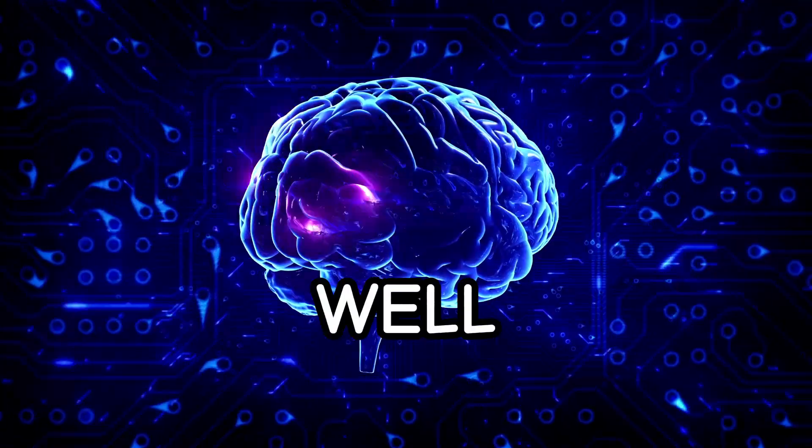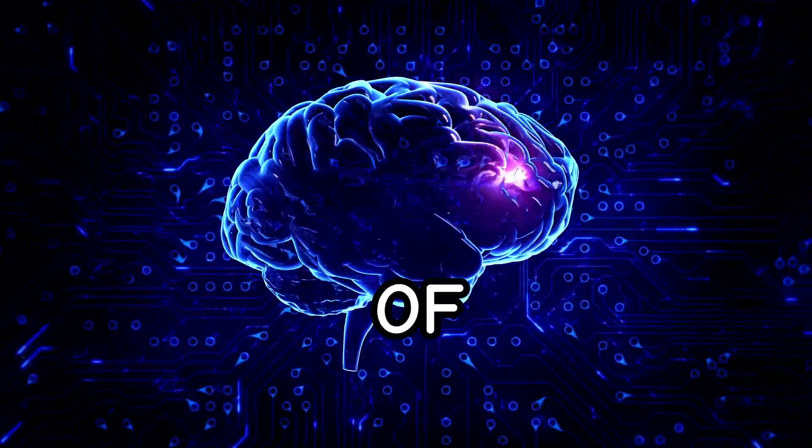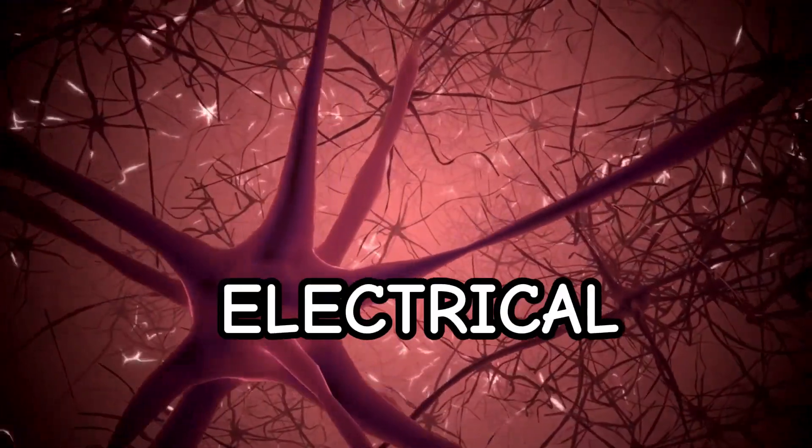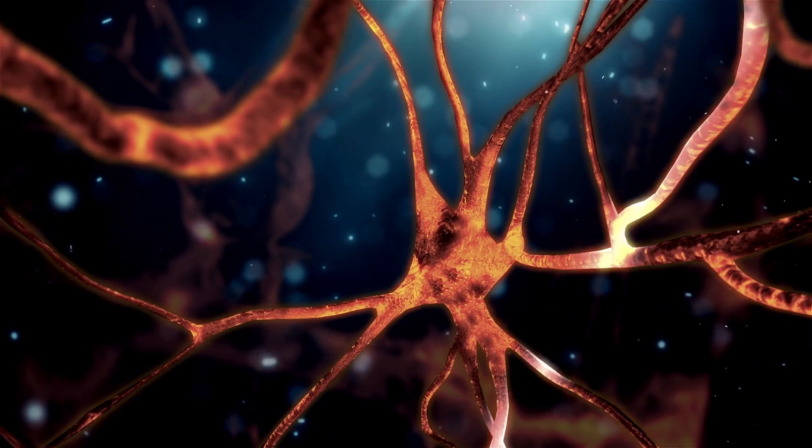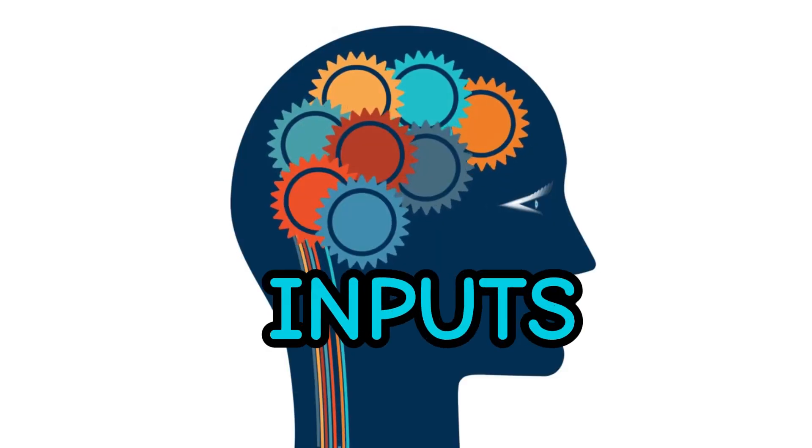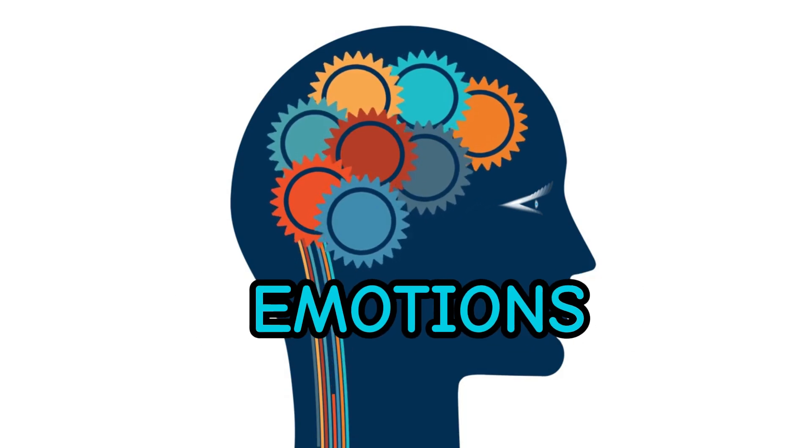But how is this possible? Well, the brain is composed of billions of cells called neurons, which communicate with each other through electrical and chemical signals. These signals form patterns that encode information, such as sensory inputs, memories, emotions, and intentions.